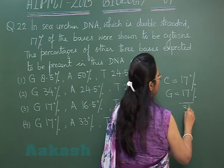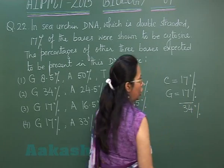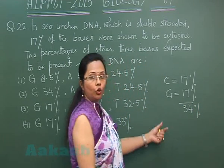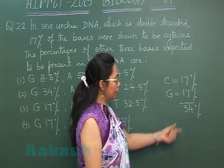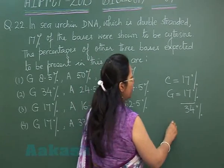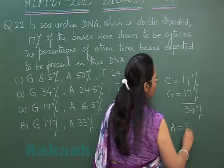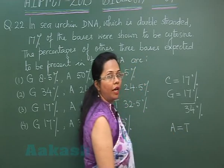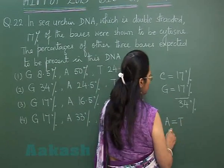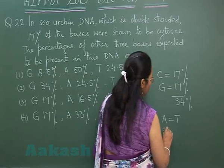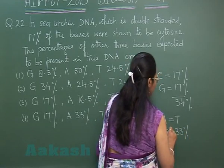That makes a total of 34% for cytosine and guanine. The remaining would be 66%, and in that we know that adenine is equal to thymine. So if the total is 66%, that means both of these are 33% each.